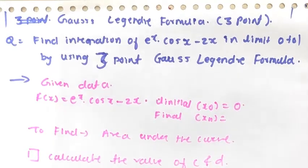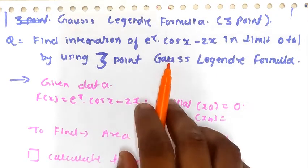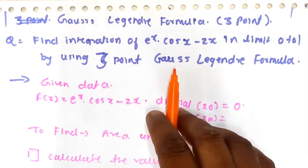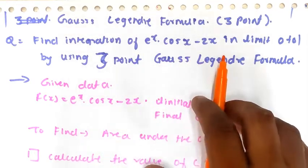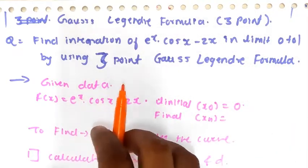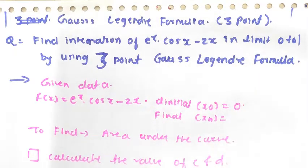Hello everyone. In this video we are going to see Gauss-Legendre Formula 3-point method. The numerical is to find the integration of e raised to x cos x minus 2x, with limits given from 0 to 1, by using the 3-point Gauss-Legendre Formula.